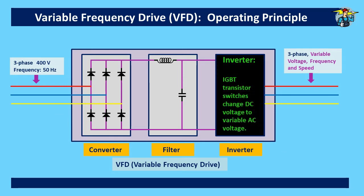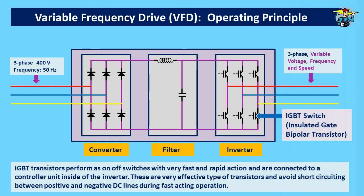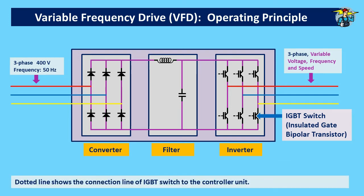The inverter consists of IGBT transistor switches — that is, insulated gate bipolar transistors — which transform DC voltage back to AC voltage, but now with a variable option. IGBT transistors perform as on-off switches with very fast and rapid action, and are connected to a controller unit inside the inverter. These are very effective transistors and avoid short circuiting between positive and negative DC lines during fast-acting operation. The dotted line here shows the connection of the IGBT switch to the controller unit.